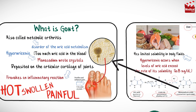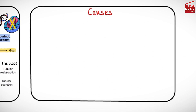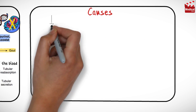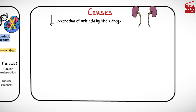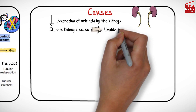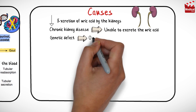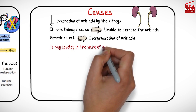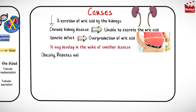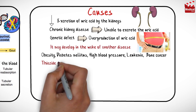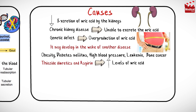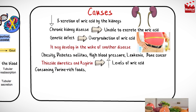It may also result in kidney stones. In many patients, gout results from decreased excretion of uric acid by the kidneys. Patients with chronic kidney disease may also be unable to excrete uric acid. In a few patients, gout is linked to a genetic defect that causes overproduction of uric acid. It may develop in the wake of another disease such as obesity, diabetes mellitus, high blood pressure, leukemia, other blood disorders, and bone cancer. Gout can also follow some medications like thiazide diuretics and aspirin, which can increase uric acid levels. Increased consumption of purines from purine-rich foods can also cause gout.